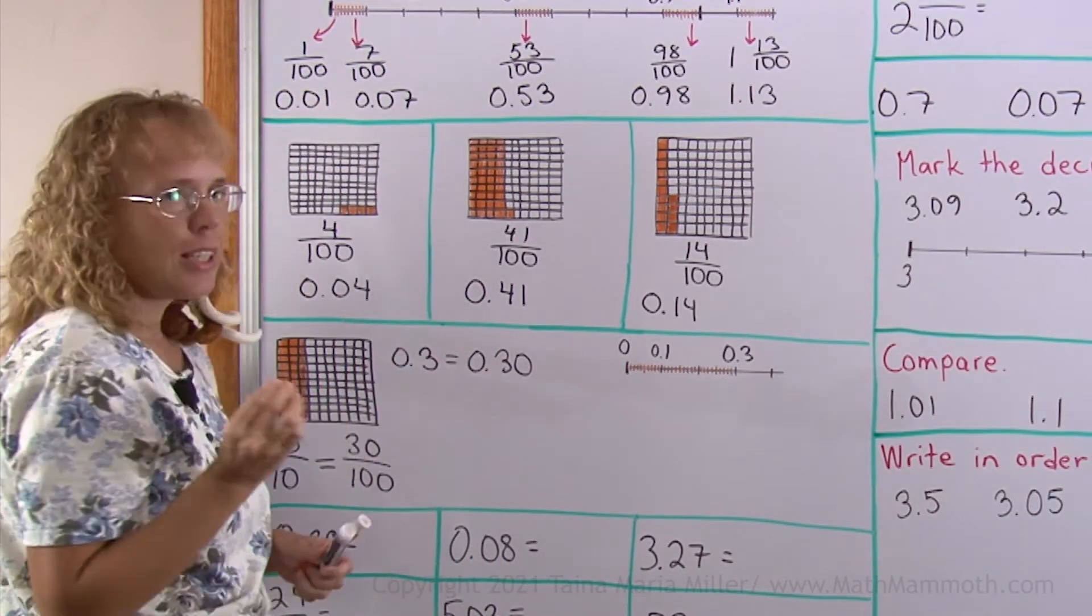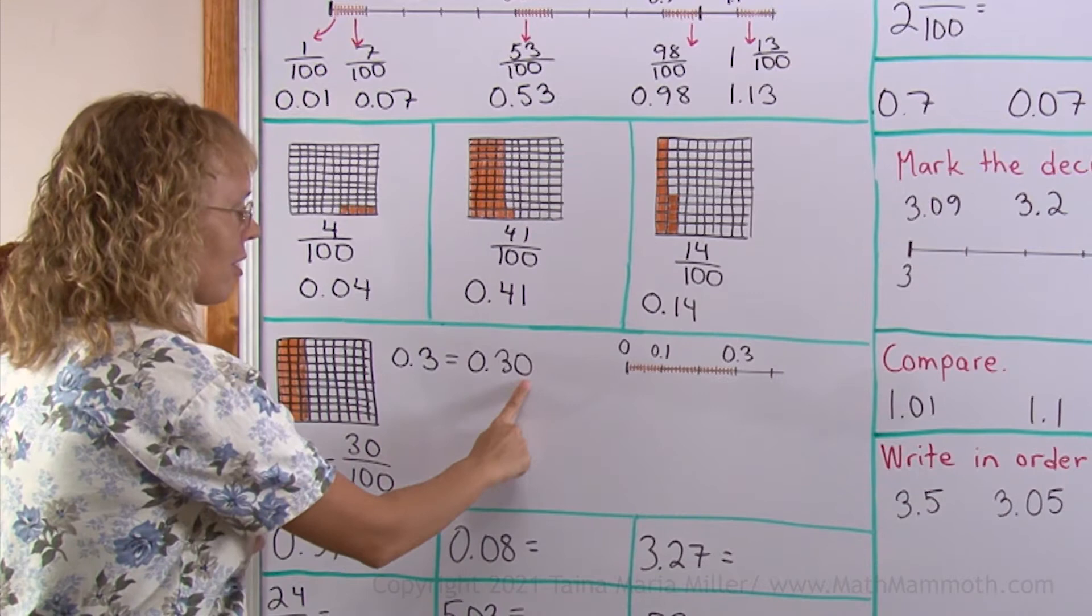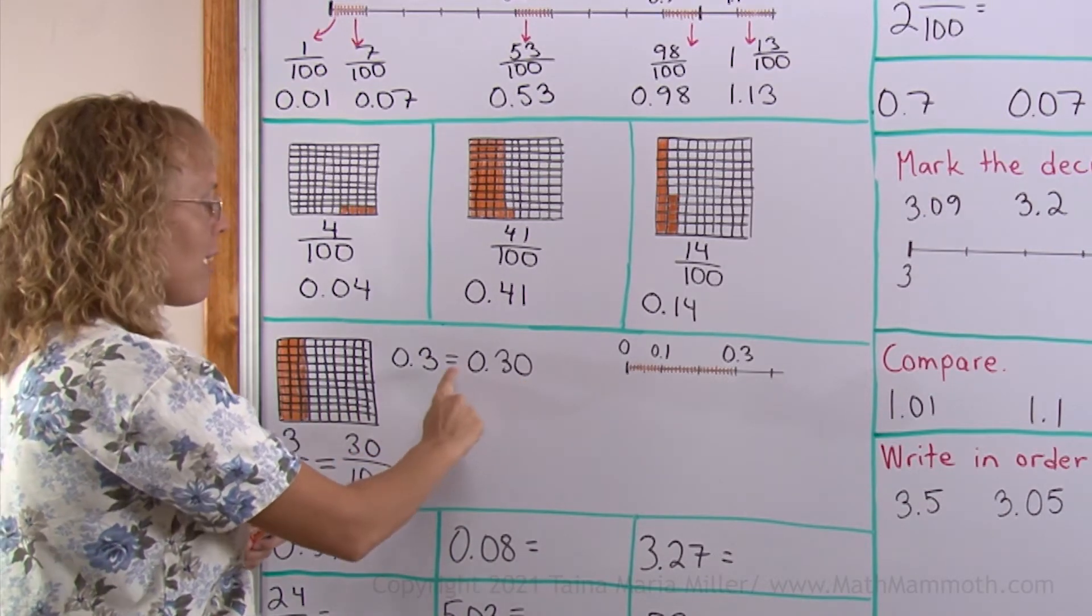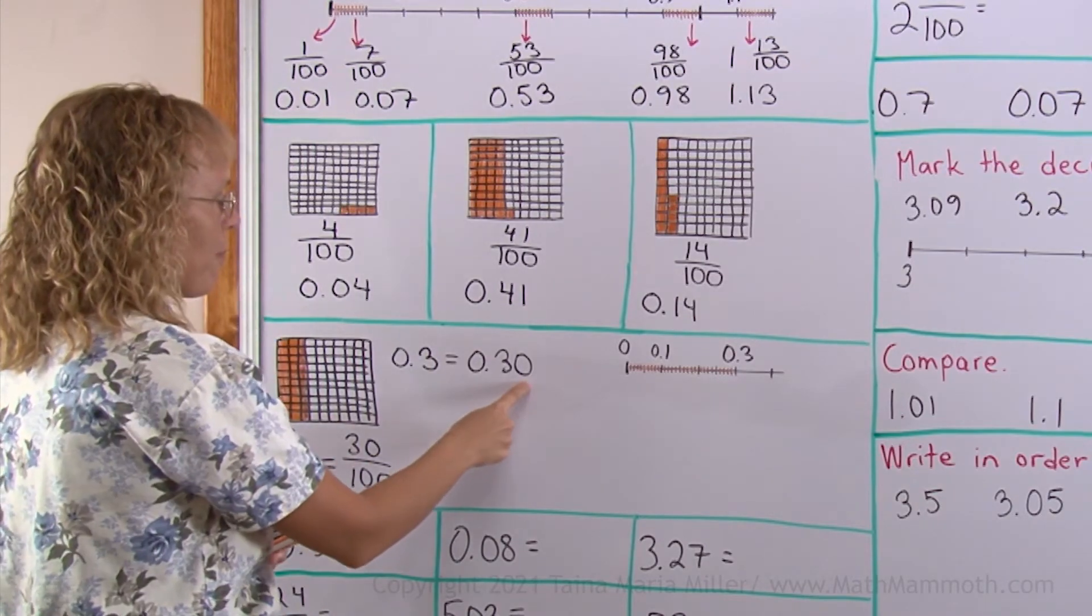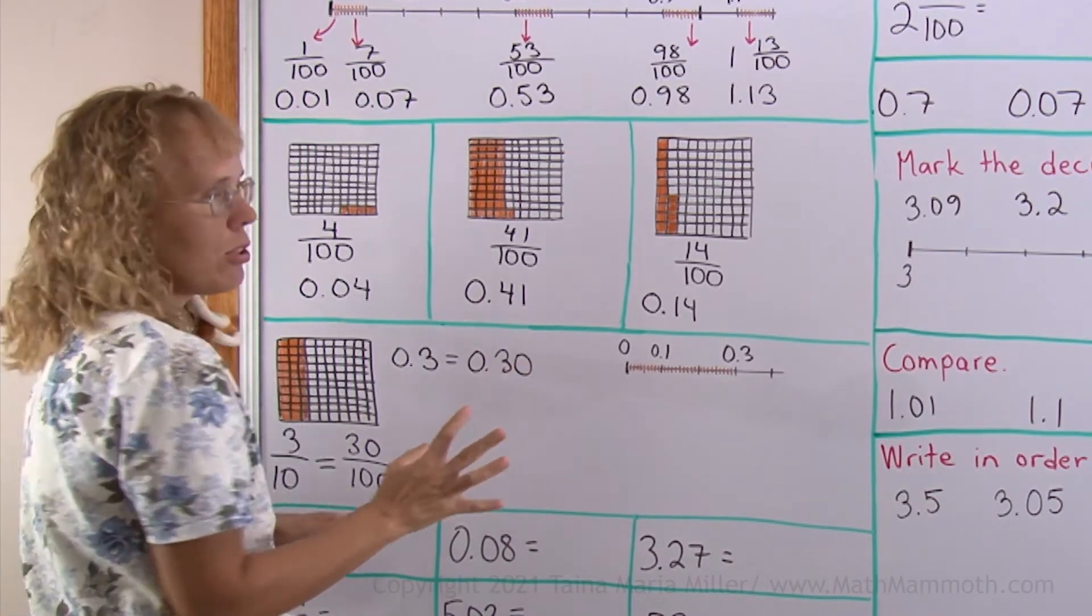Now, from this, we will also see that the 0 here, the decimal 0 tagged on after a decimal, it does not change its value at all. I could even add more zeros, it would not change its value.